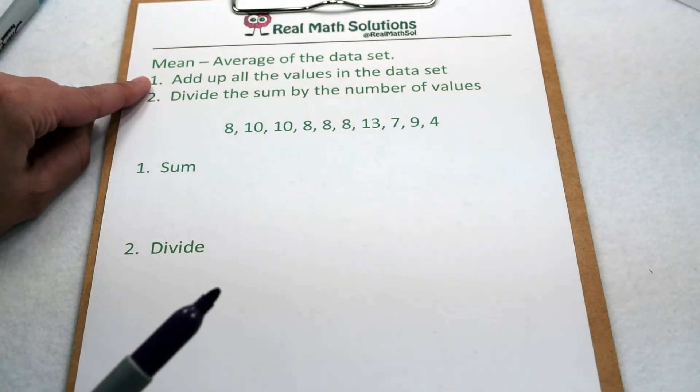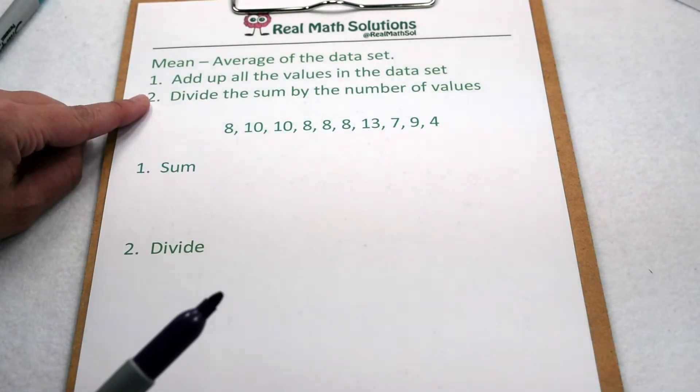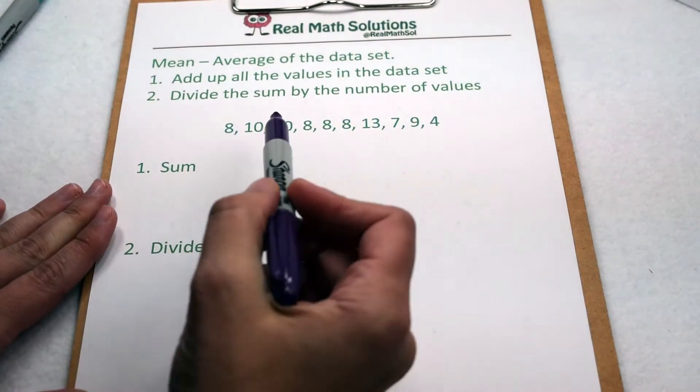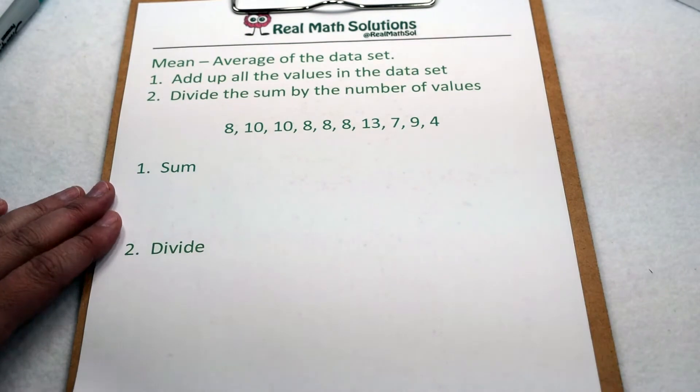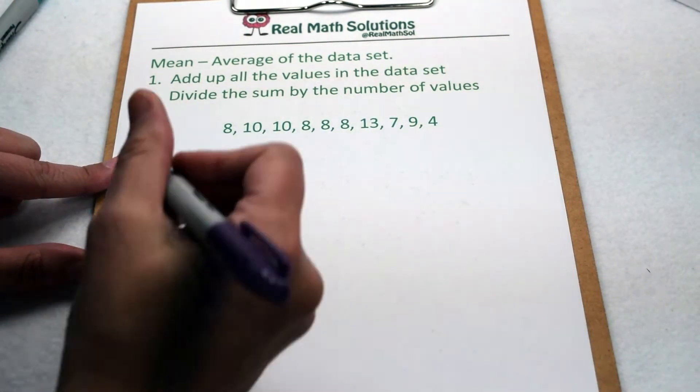To find the mean, we add up all the values we have, and then we divide the sum of that data by the number of values. Here we have a group of friends that surveyed as to what size shoe they wear. To find the average shoe size, we need to start by finding the total of all their shoe sizes.